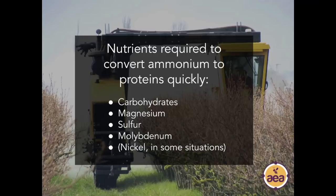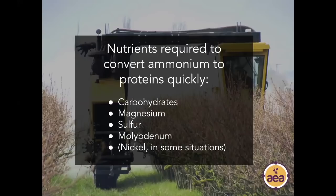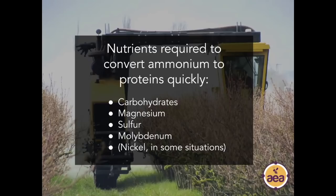The nutrients required to convert ammonium in the leaf back into proteins — following catabolism or root system overwhelm — are adequate carbohydrates, magnesium, sulfur, and molybdenum. In some soils and situations you also need to address nickel. With the first four elements — carbohydrates, magnesium, sulfur, molybdenum — a foliar application of those four nutrients will convert the ammonium showing up in a sap analysis back into complete proteins within 24 to 48 hours in about 80 percent of cases.